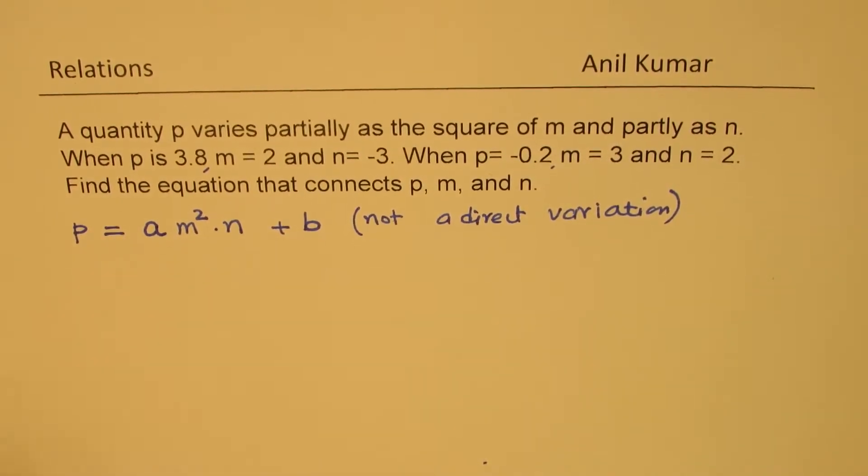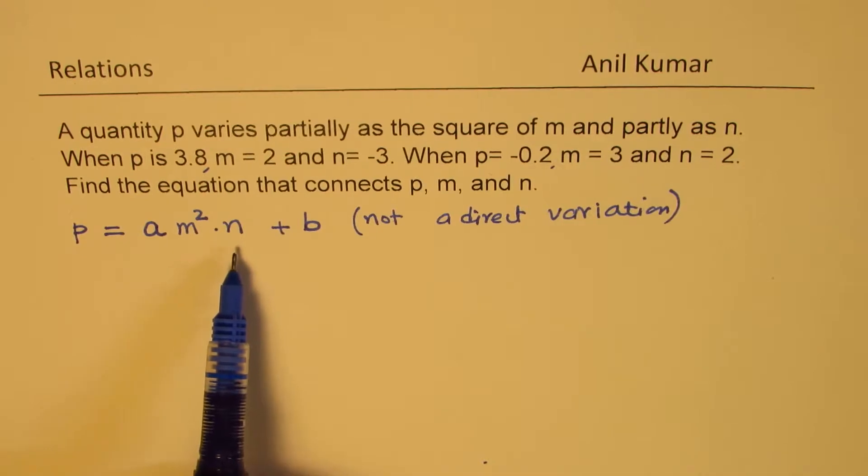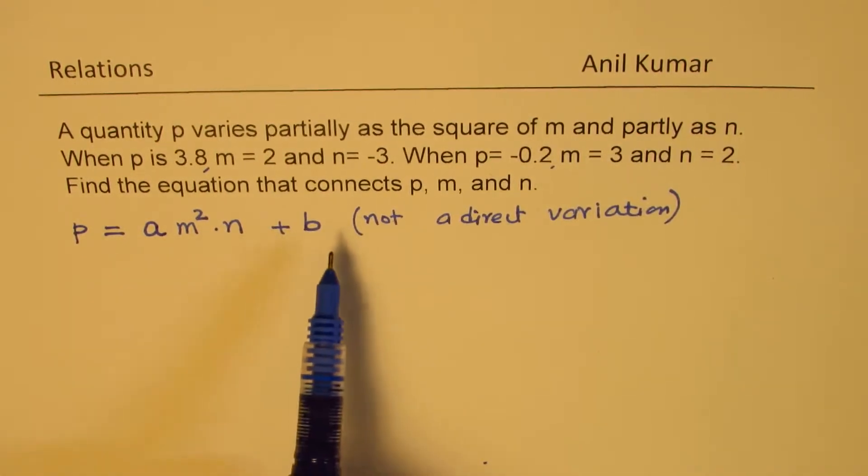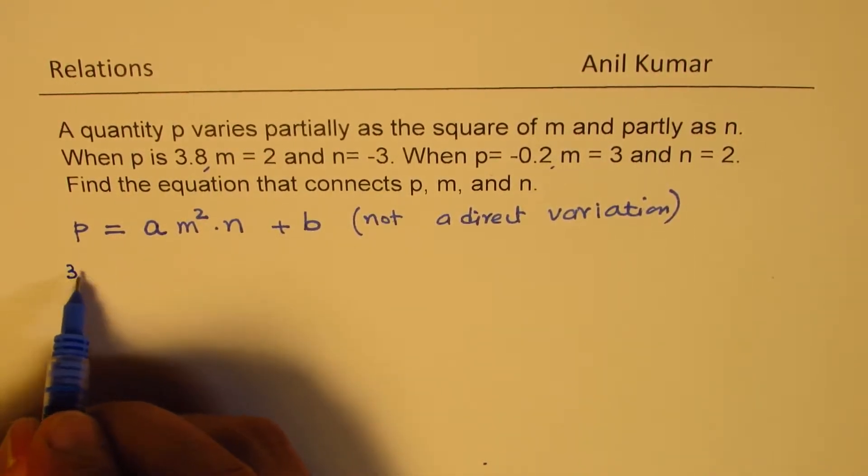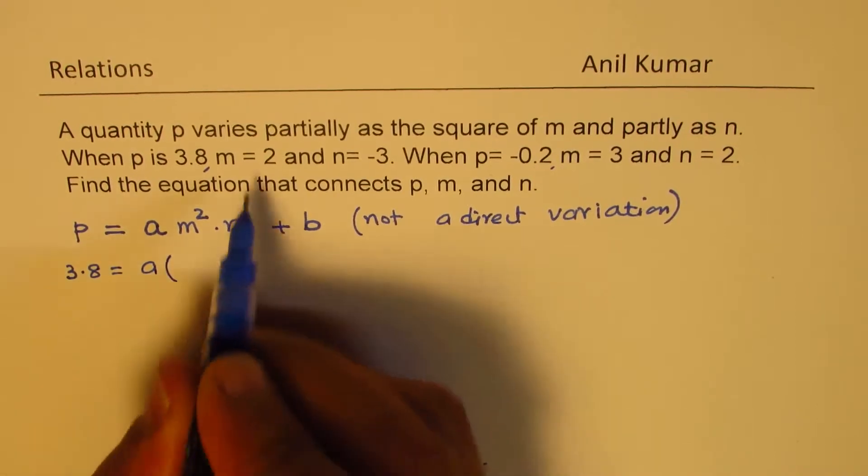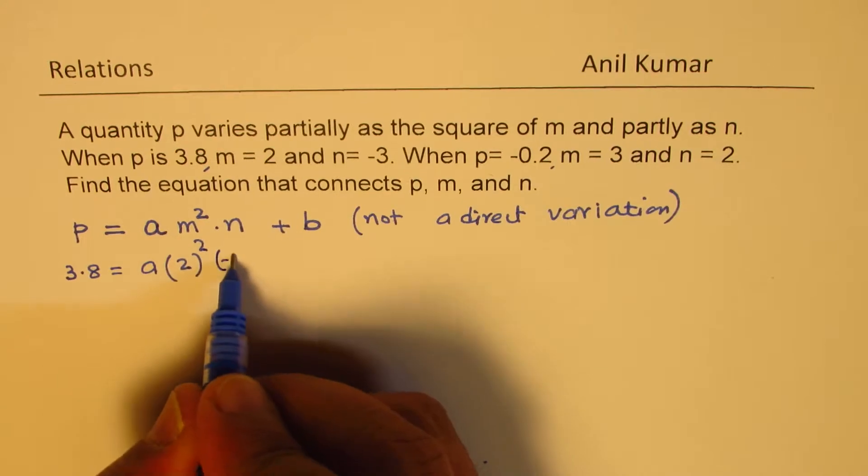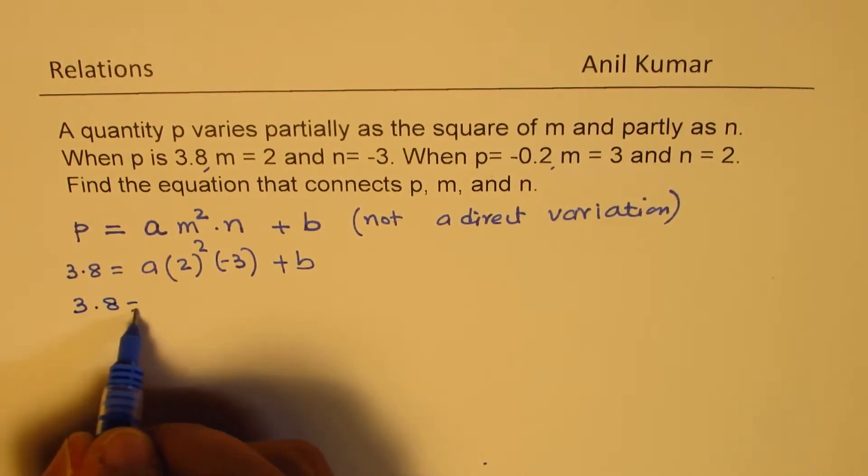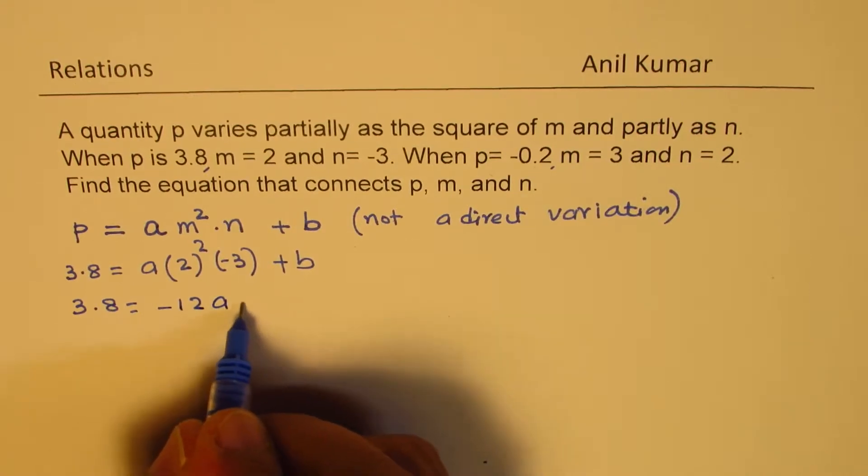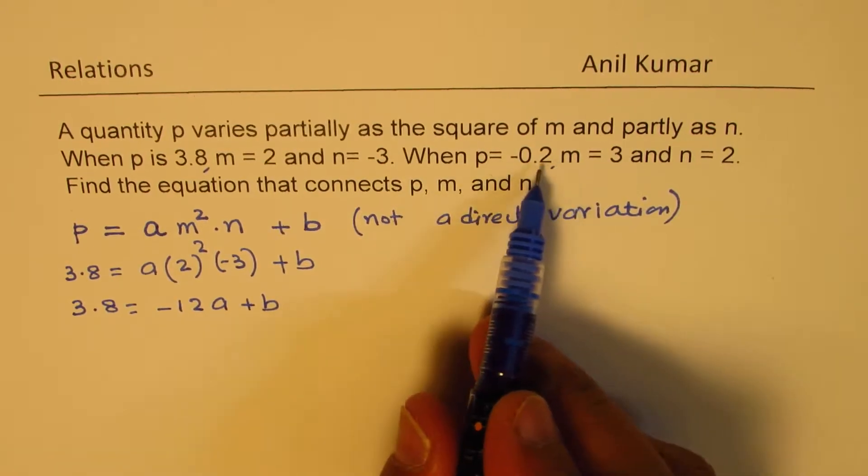Now with that in mind, we are given two set of values. These two set of values will help us to find A and B, the two unknowns. So from the first set of values, which is 3.8, we get 3.8 equals to A, M is 2, 2 squared, N is minus 3, plus B. We get one equation, which is 3.8 equals to 4 times 3, 12, which is with negative sign, minus 12A plus B.